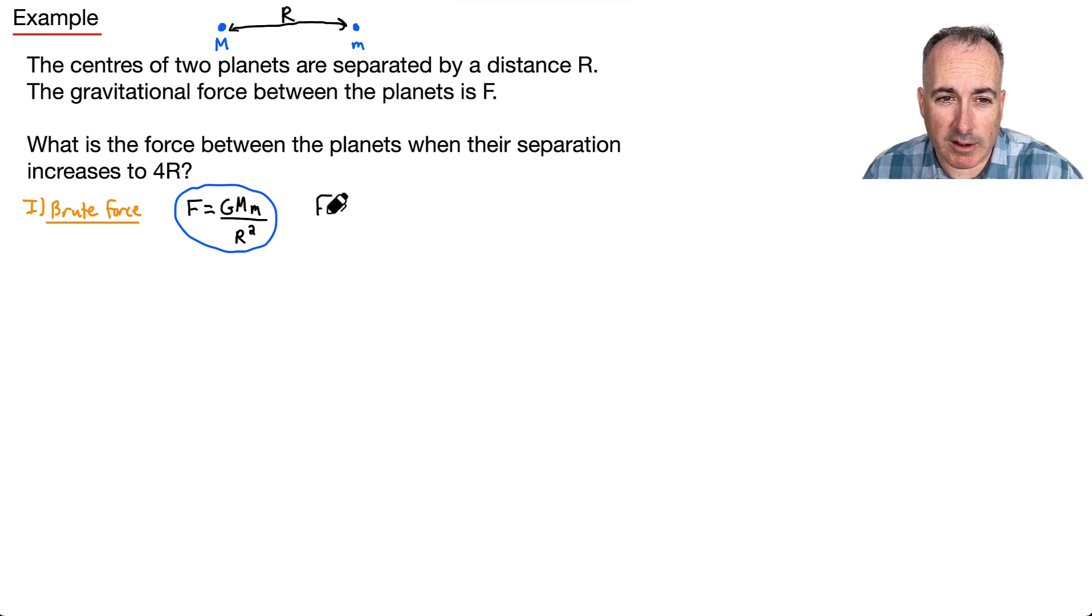Now I need a new one, so I'm going to write one: maybe F2 equals GMM because the masses haven't changed, but the difference is the distance is 4r. Now I'm going to make a mistake on purpose, so watch carefully. What I've done right here seems really reasonable, doesn't it? This is a mistake that a lot of students make.